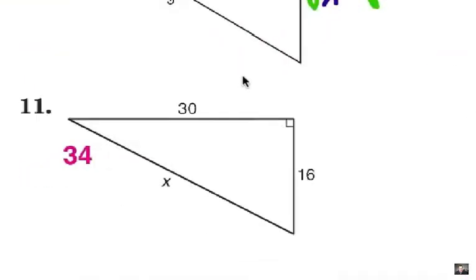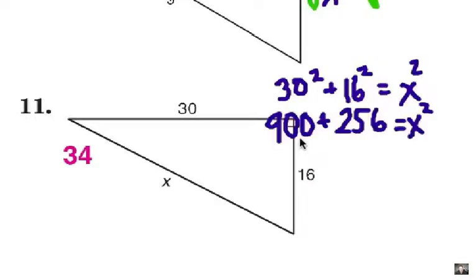On number 11, hope that you tried it. We have 30 as a leg and 16 as a leg. So we've got 30 squared plus 16 squared equals the hypotenuse which is x and squared. Let's multiply those out, which is 900 and 256. We add those together to get 1156 equals x squared.